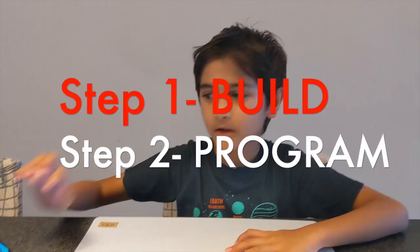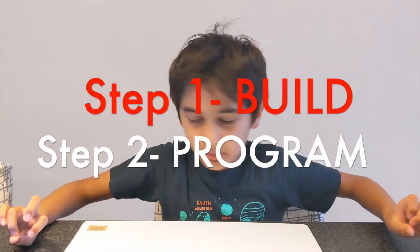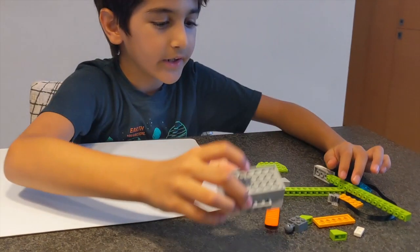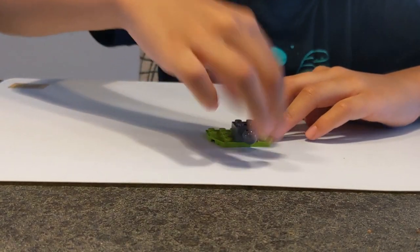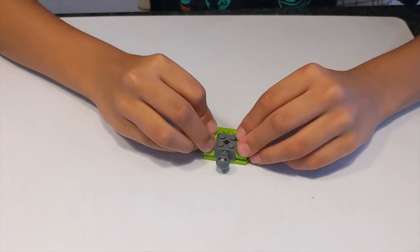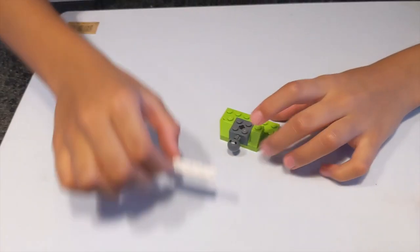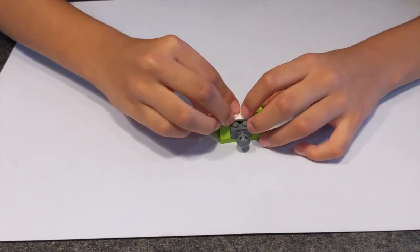So let's not waste any more time discussing and get right into the build. So the first piece you need is one of these: a two by two piece with a ball, two one by two slopes, a one by four plate.